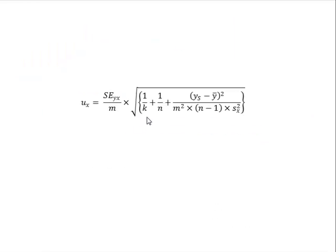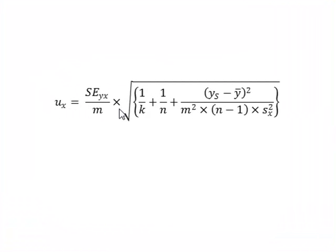In this video we will look at the analyses required in Minitab and SPSS leading to a calculation of the uncertainty in using a straight calibration line. This calculation is based around an equation which shows the uncertainty ux in the x-direction of an intercept at a value of ys in a straight calibration line, where se is the standard error of regression, m is the slope of the calibration line, n is the number of values used to provide the calibration line, and k is the number of replicate measurements used to get a best estimate for the y value ys. y-bar is the mean value of the calibration points, and Sx squared is the variance of the x data values in the calibration line.